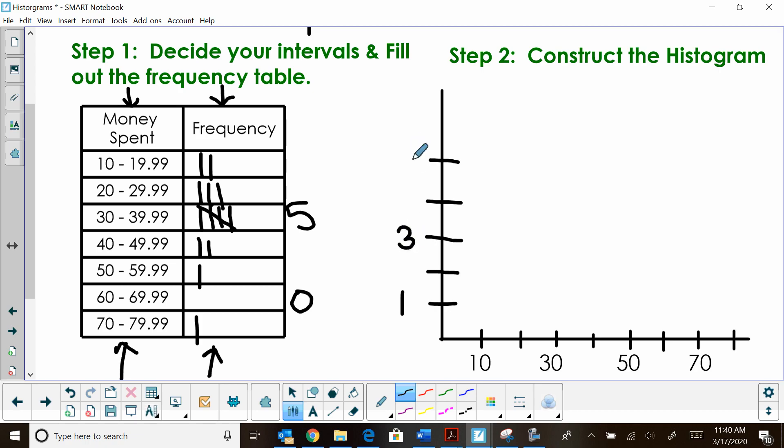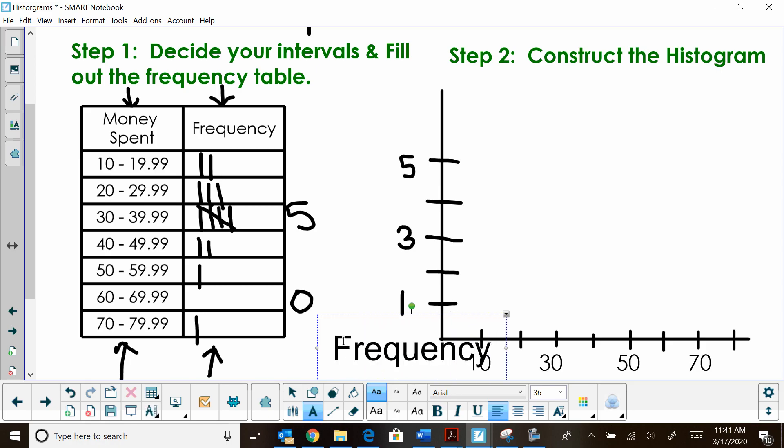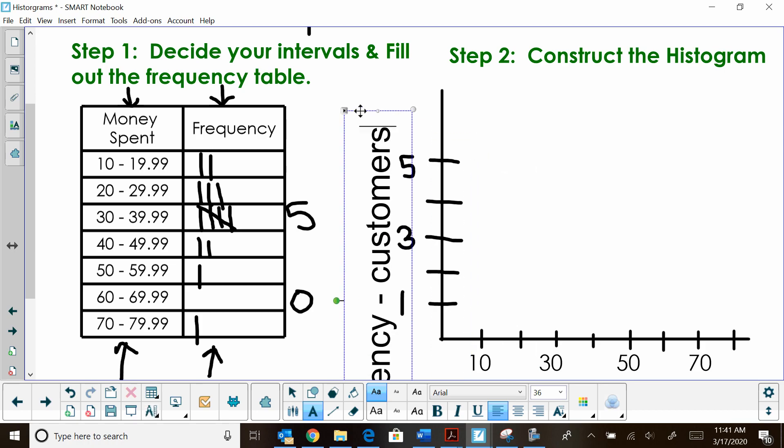So I'll do 1, 3, and 5. So this column doesn't, so this axis doesn't get too crowded. Now, what does that represent? That represents the frequency of the money spent by customers. So I'm going to label that the frequency of the customers. And let's turn that and move this over here to this column.